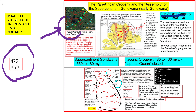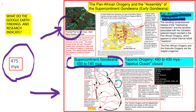The Pan-African orogeny mountain building event was between 650 and 500 million years ago, straddling the Cambrian and pre-Cambrian. The resulting compressional release of the interlocking mechanism and the dynamic associated with the Canadian impact resulted in the Pan-African orogeny, which appears to show internal refold reactions. It's one of the largest orogenies between the Pan-African and the Grenville orogeny. The Taconic orogeny specifically is more here in this diagram, beginning about 480 million years ago and going to about 430 million years ago, as defined by the Iapetus Ocean closing.